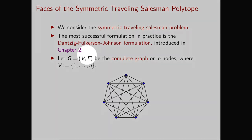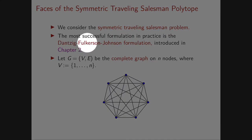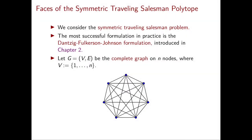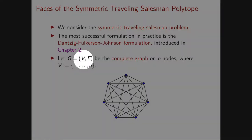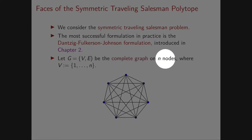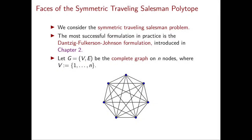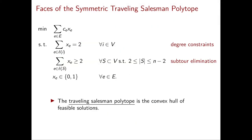In particular we saw the Dantzig-Fulkerson-Johnson formulation, which is the most successful formulation in practice. So let us consider an undirected graph and in particular we look at a complete graph on n nodes. Here's an example with seven nodes. This is the Dantzig-Fulkerson-Johnson formulation that we saw.